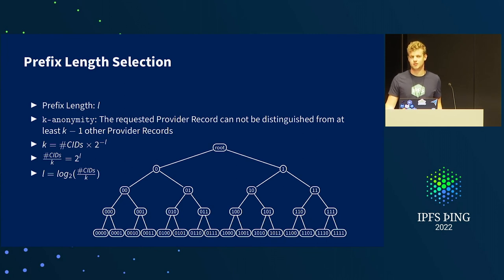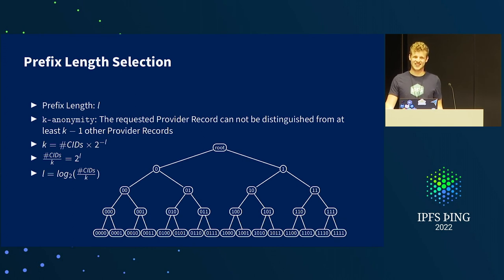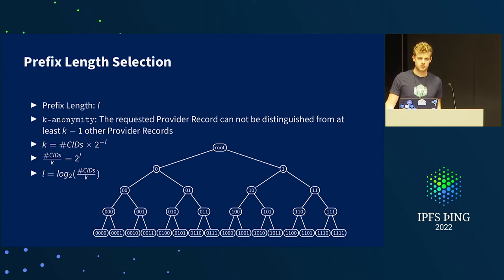Another question: you'd probably also want to modify BitSwap, because otherwise it leaks which CID you want to everyone you talk to. Yes, definitely — something similar would be possible there. Once you limit requests to peers you know have the content, or do something analogous to this double-hash approach, you could get similar privacy properties.